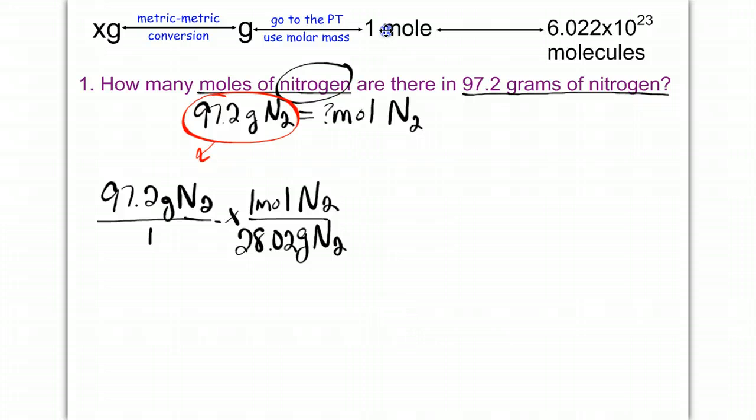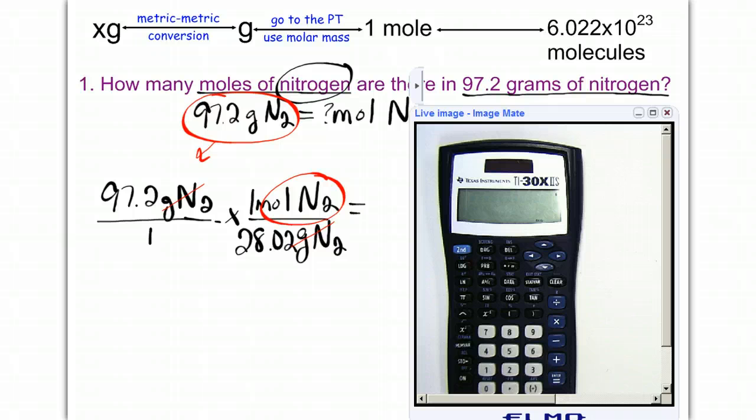Now that I have, now that I'm at moles, I'm finished with my problem, since that's what they wanted me to figure out. So I can calculate my final answer. Notice that the grams cancel, and I'm left with moles of nitrogen. And so that's going to be the unit on my final answer.